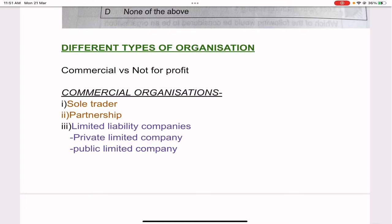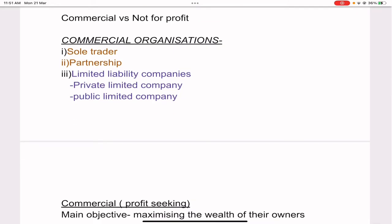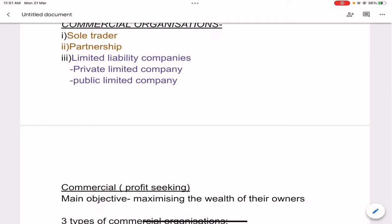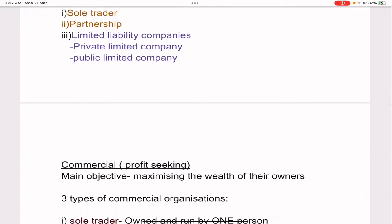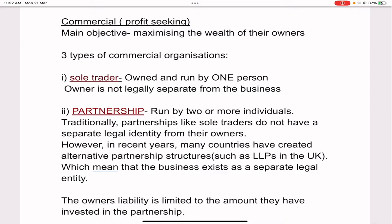Different types of organizations — commercial versus not-for-profit. Commercial organizations are profit-seeking, with the main objective of maximizing the wealth of their owners. There are three types of commercial organizations: sole trader, partnership, and limited liability company. Inside a limited liability company there are two further types: private limited company and public limited company.